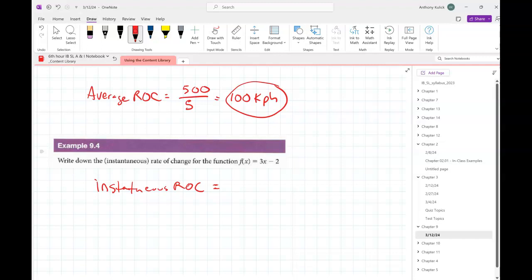You should be able to do this in your head without writing anything down. Who's got it? 3 is correct. How'd you get it? It's a linear function. The slope at every point is the slope of the function, which is 3. If this was 3x squared minus 2, that's a horse of a different color. But if you have a linear function, the instantaneous rate of change is just going to be the slope for the function.